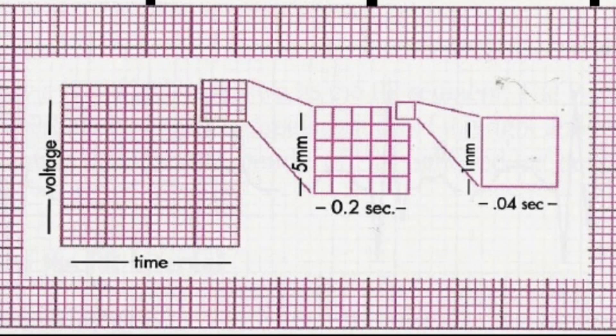You have to memorize the standard paper speed, which is 25 millimeters per second. If it's not 25, your calculations will be off, so before starting an ECG interpretation make sure the paper speed is 25 millimeters per second. The heavy vertical lines are 5 millimeters apart and represent 0.20 seconds at that standard recording speed.